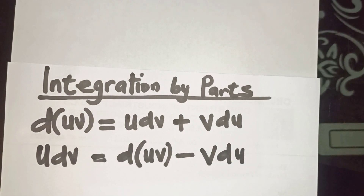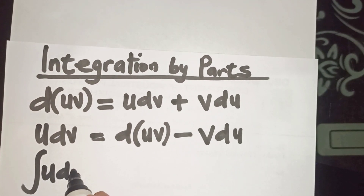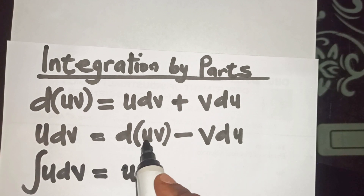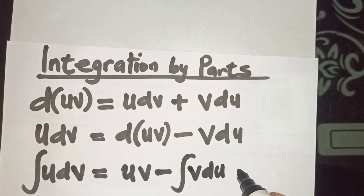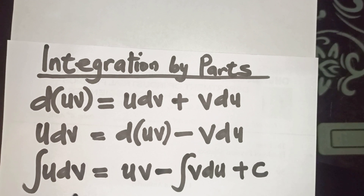Then, if we integrate, we will have the integral of u·dv is equal to uv. Integrating d(uv) gives uv, so we have uv minus the integral of v·du plus the constant of integration. That is, the integral of u·dv equals uv minus the integral of v·du plus c.